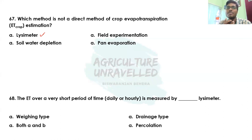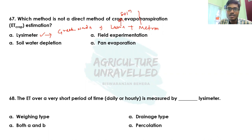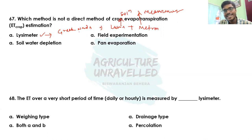The first method is the lysimeter, which is an efficient method for estimation of crop evapotranspiration. The term lysimeter is derived from two Greek words: 'lysis' meaning solution, and 'metron' meaning measurement.